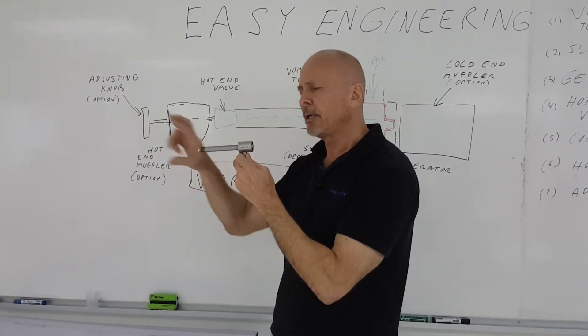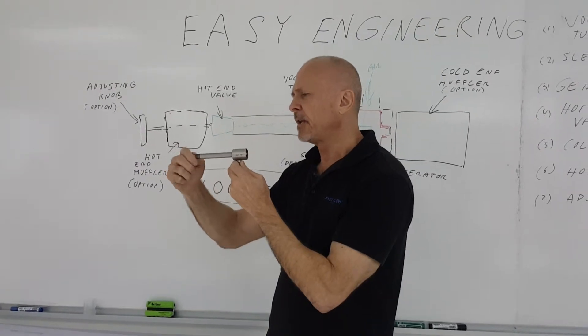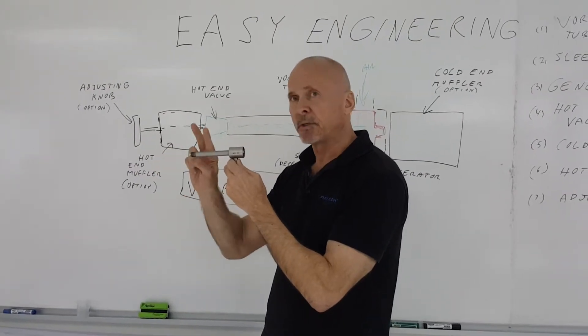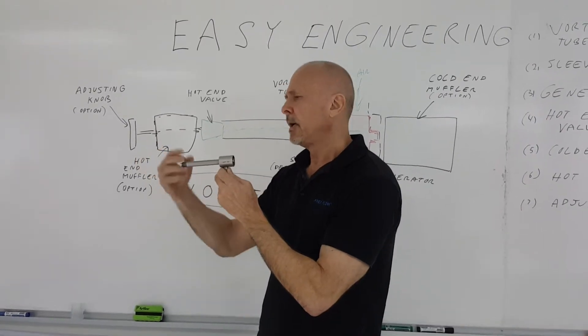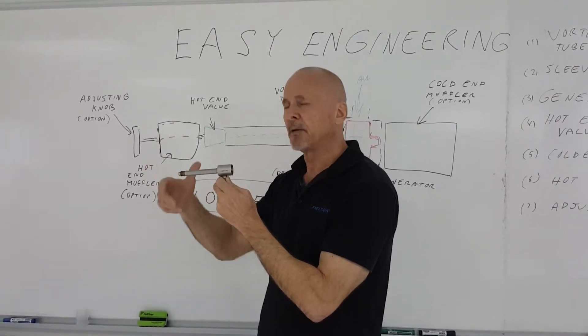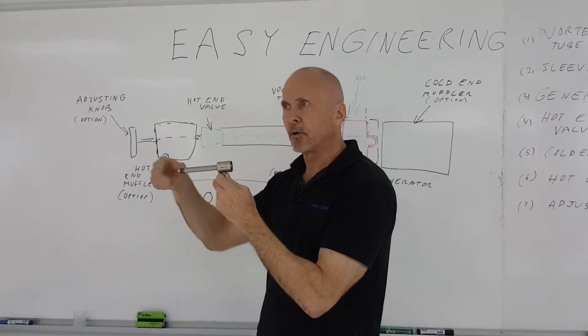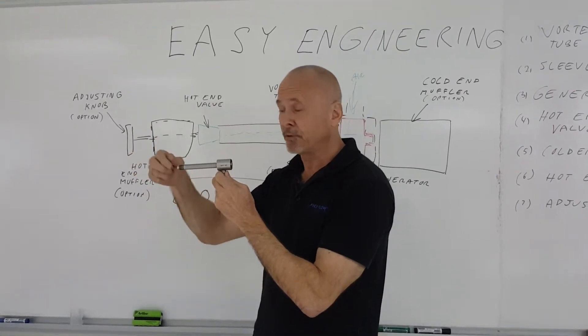So this is the hot end, hot end air comes out here, the valve can be adjusted. There's two types of valves. You can either have it adjusted with a screwdriver. This way you get some security in a factory operation where somebody can't go around adjusting it all the time because you need a screwdriver.